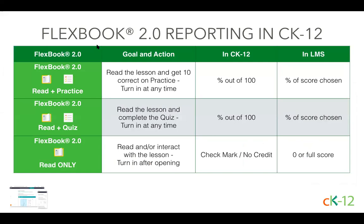Let's talk about what you're assigning and what is reported back to you. This information is on the resource page and the Google Classroom shortcut sheet, so you don't have to have it all memorized. Our Flexbook 2.0 lessons automatically assign the matching practice or quiz attached to the lesson when you make that assignment. The score reported to your class is based on that attached practice or quiz. The practice has a goal of 10 correct, and quizzes have a true percentage score of right versus total. If you make your own Flexbook and haven't included matching practice, the lesson is assigned like other learning modalities with full or no credit. If you set the point value to 100, it would be the same percent out of 100.